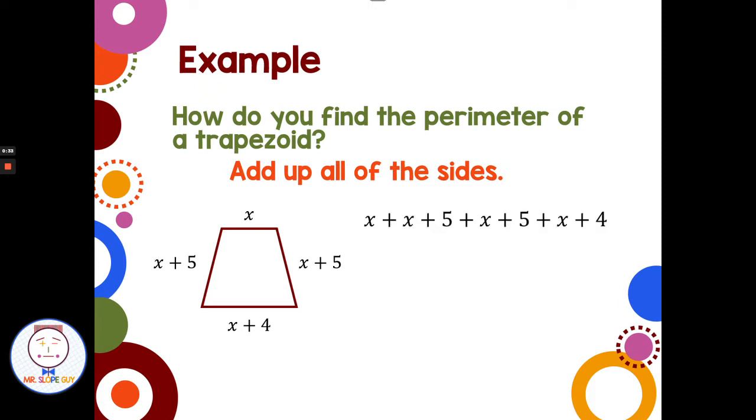So I add x plus x plus 5 plus x plus 5 plus x plus 4. Then if I look at combining like terms, I have x plus x plus x plus x is 4x, and I combine my positive 5, positive 5, and positive 4 to get 14.